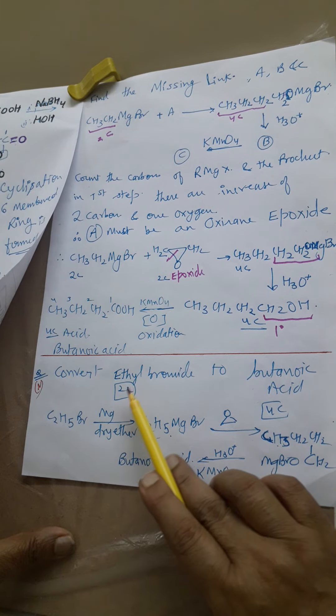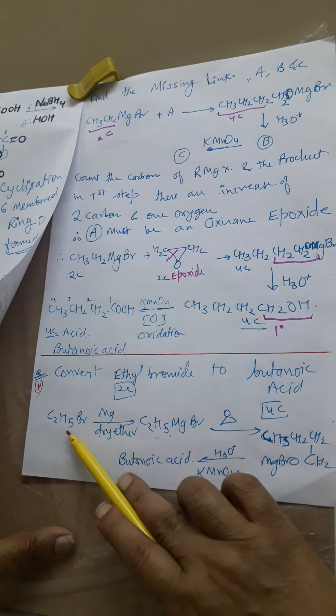So here as we have discussed ethyl bromide, so write C2H5Br. It reacts with Mg dry ether, then you'll get Grignard reagent C2H5MgBr, which when reacting with this epoxide, again the 1 degree alcohol you'll get. We have done that earlier. After hydrolysis you'll get 1 degree alcohol. Here you'll get CH3-CH2-CH2-CH2OH. How many carbons are there? 4. So 4 carbon alcohol, you'll get on oxidation you will get butanoic acid. Is that clear?